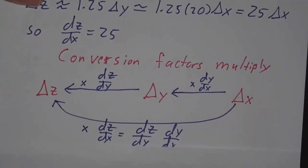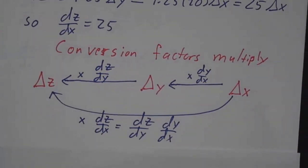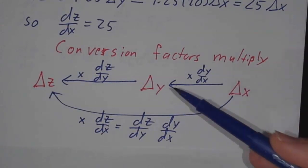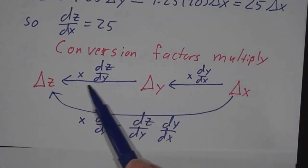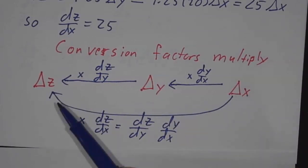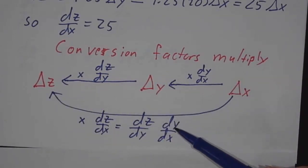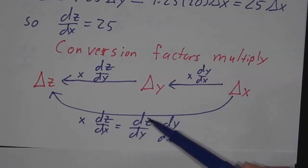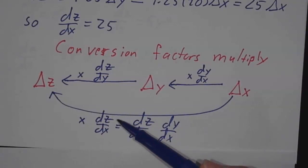Our conversion factors multiply just like with currency. If somebody tells you how much x changes, you multiply by dy/dx to figure out how much y changed, and you multiply that by dz/dy to figure out how much z changed. So if you want to go straight from x to z, you multiply by dy/dx times dz/dy, and that's the same as multiplying by dz/dx.